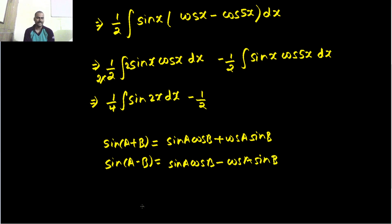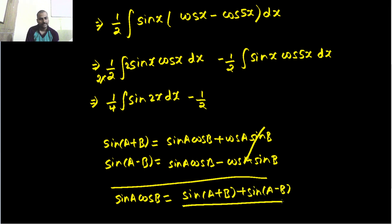So if you add them, you are going to get 2 times sin A cos B. So if you want sin A cos B, then this will be sin(A + B) plus sin(A - B) divided by 2. So if you remember, you don't need to do this type of calculations in the middle.